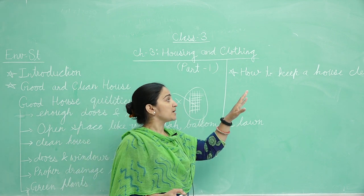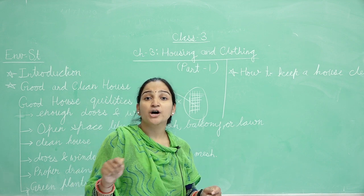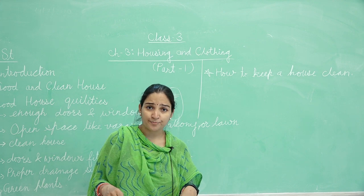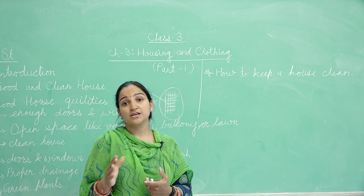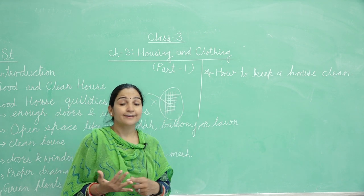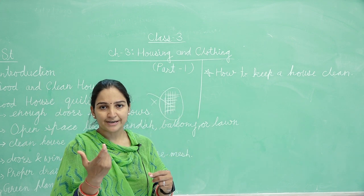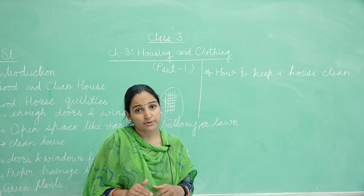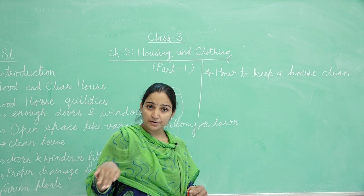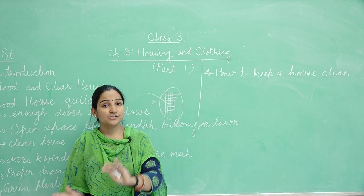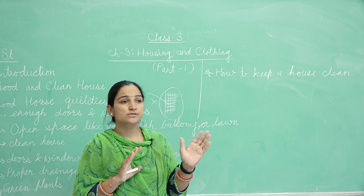Next topic is how to keep a house clean. First of all, swept it — sweeping karo, jhaadu nikalo achche se. Phir mopping karo — mopping means pochha lagao. Pochhe mein generally phenyl, detergent, lizol, dettol — ye sari germ killers daalte hain taaki infection aur chote-chote insects aur keeday mar jayein. Phir jo bhi garbage sweeping ke dauran ho, woh dust bin mein hi dump karna hai. Kal-kal ghar-ghar se kachra lene waali gaadiyaan aati hain — usme hi daalna hai, idhar-udhar house ke around nahi daalna.